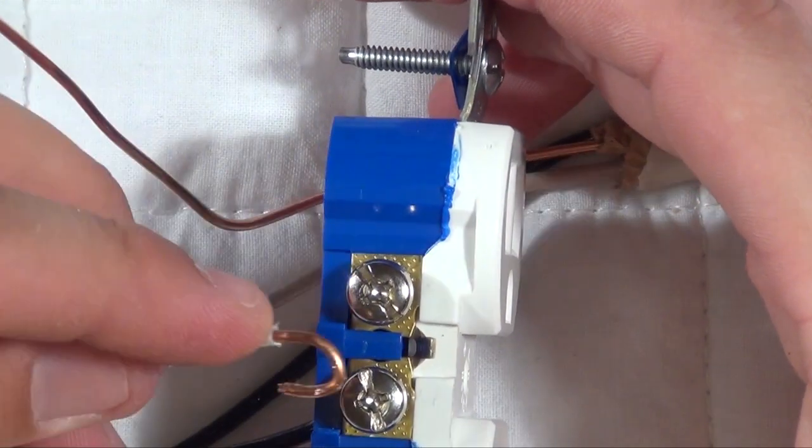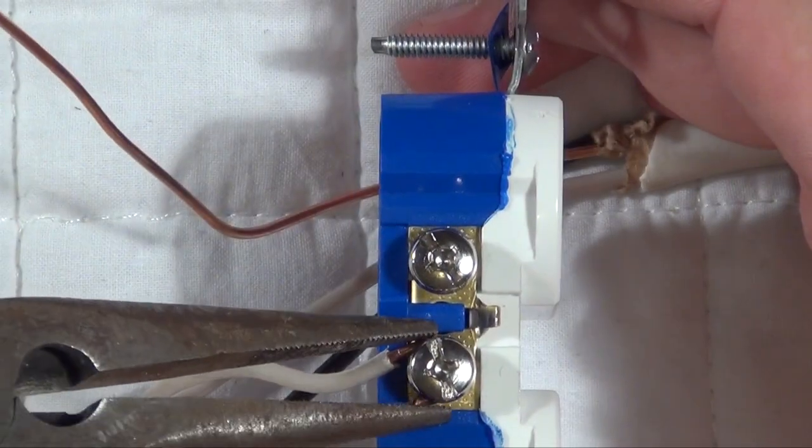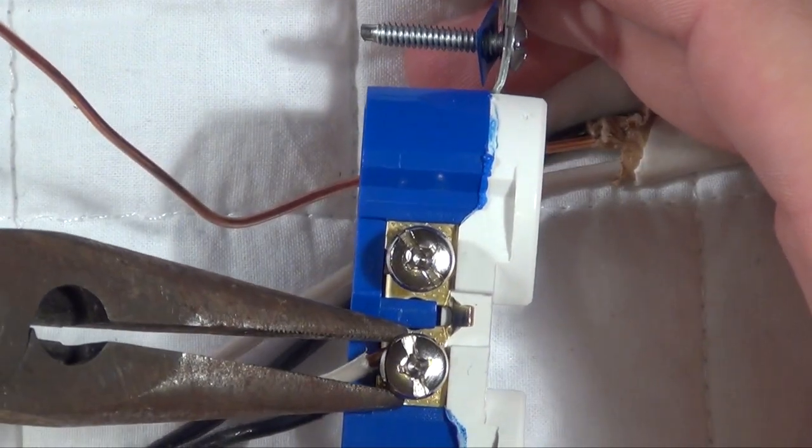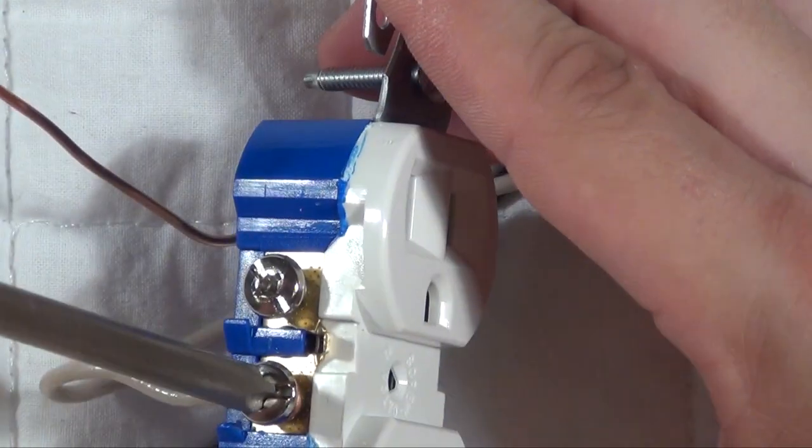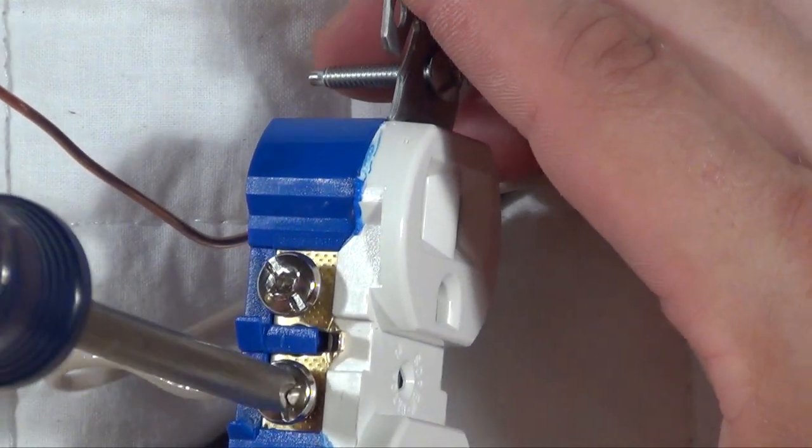Repeat the previous steps for your white wire, which connects to the silver screw. Use your pliers to squeeze it and tighten it down with your screwdriver.